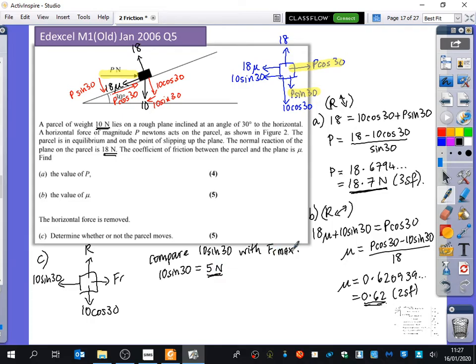And I need to find out what friction max is equal to. So friction max is equal to μR. Now μ, we worked out earlier in the question, which is 0.62. The temptation that people do, and they do this wrong, is they would say, oh well, earlier on R was 18. So I'm just going to do 0.62 times 18. But we've already established R is different because P is gone. What is R in this case? 10cos30. So the maximum value that the friction can take is 0.62 times 10cos30, which is 5.37 newtons.